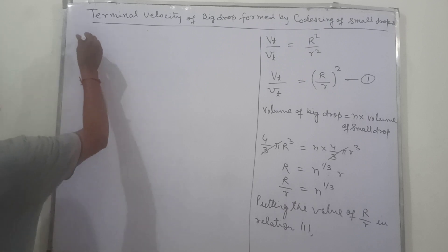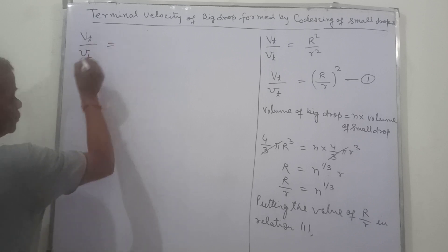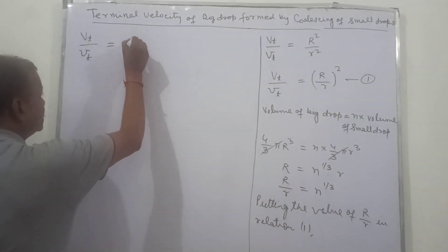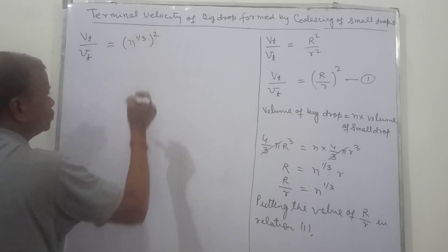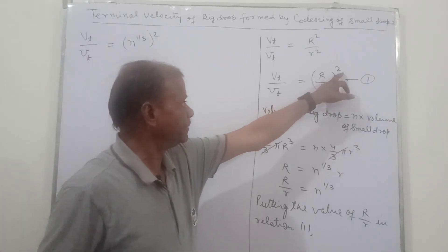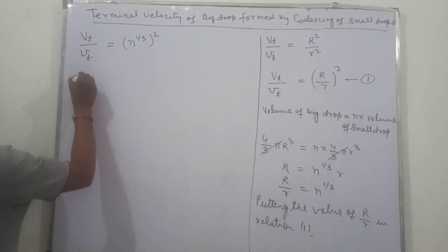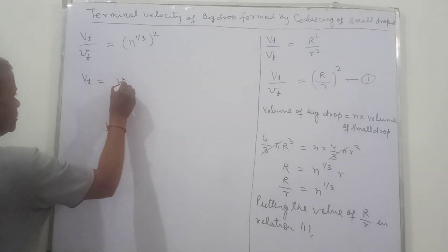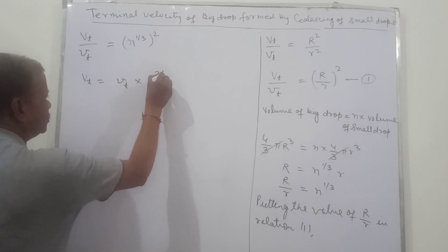Putting the value of R/r into relation 1, we have VT / Vt equal to (N^(1/3))² = N^(2/3). So this VT is equal to Vt times N^(2/3).